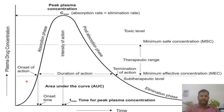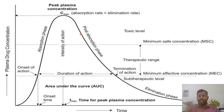Initially, the drug in plasma is zero. But slowly, as the drug will be absorbed, its concentration in plasma will increase. Then, when drug elimination starts, the plasma drug concentration will be decreasing gradually.